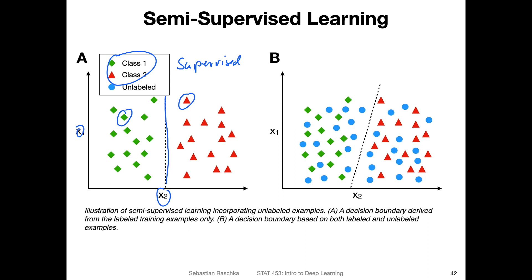Now consider a case where we have more data, but the data is unlabeled. Consider this unlabeled data I've added on the right hand side — these blue dots are the unlabeled data points. If I consider these unlabeled data points, a semi-supervised learning system may derive a slightly different decision boundary.